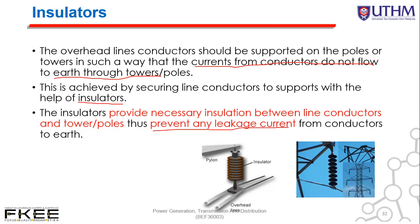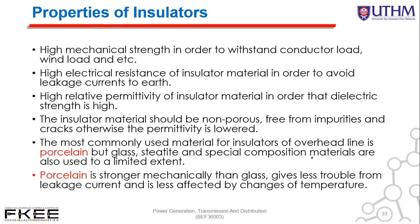The insulator protects the current flow from the conductor to the cross arm or to the tower. Properties of insulators must include: high mechanical strength to withstand conductor load, wind load, etc.; high electrical resistance of insulator material to avoid leakage current; and high relative permittivity so that the electric strength is high. Insulator material should be non-porous, free from impurities and cracks. The most commonly used material for insulators on overhead lines is porcelain, because it is stronger mechanically than glass, gives less trouble from leakage current, and is less affected by changes of temperature.